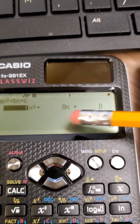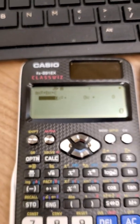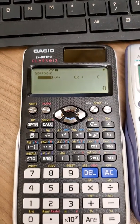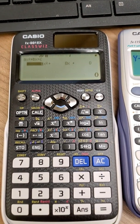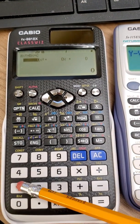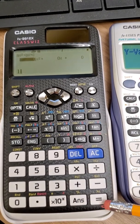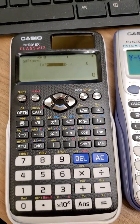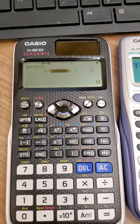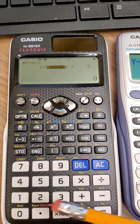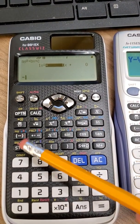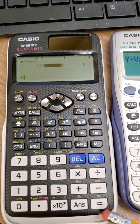And then all I have to do is input the coefficients. So the coefficient again for x squared was 1. So let's push 1 equals. The coefficient of x was negative 8. So again we're going to hit the negative button and then 8 equals.